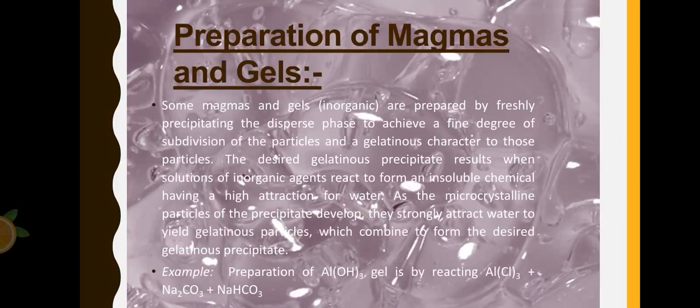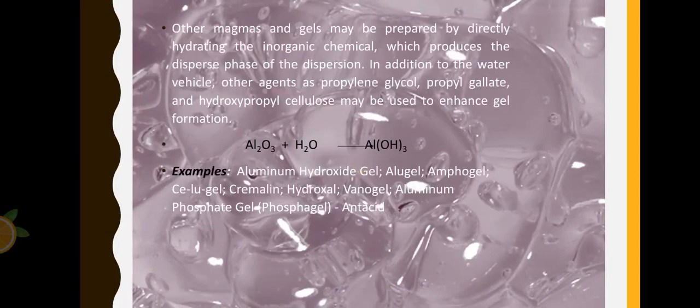Other magmas and gels can also be prepared by hydrating the inorganic chemical, which then produces the internal phase. Water can also be added in with other agents such as propylene glycol, propyl gallate, hydroxypropyl cellulose. For example, aluminum oxide plus water results in aluminum hydroxide. Examples are aluminum hydroxide gel, Cremelin, and aluminum phosphate gel.